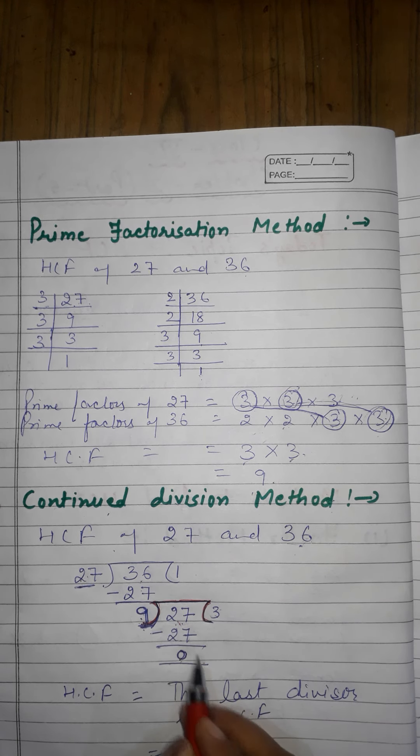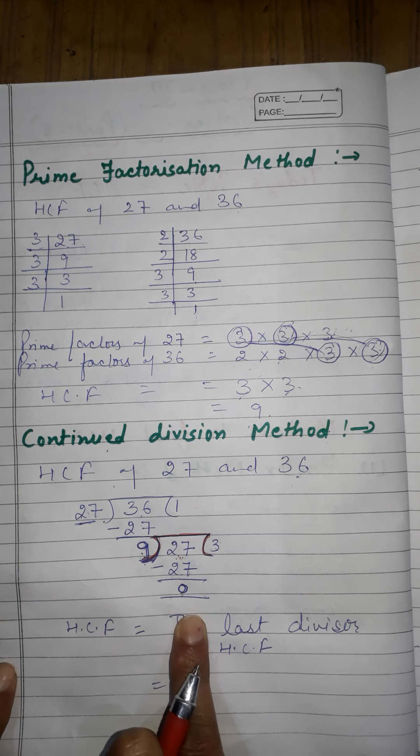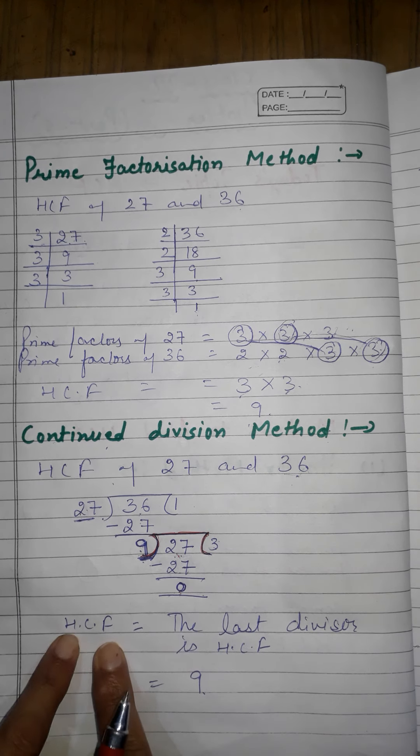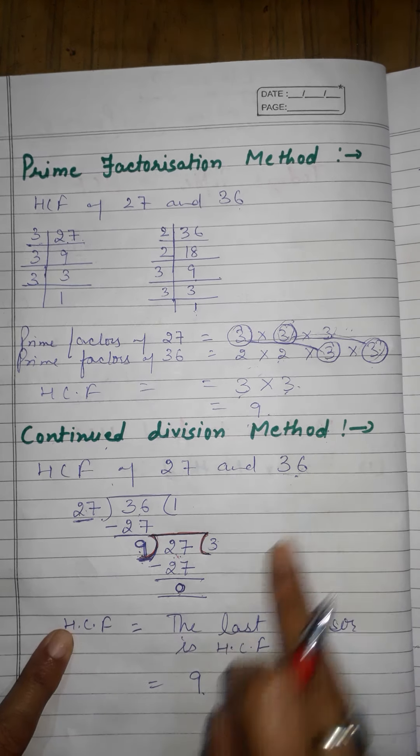The remainder is zero, so the process is complete. Now what is the HCF? In the Continued Division Method, the HCF is the last divisor. We had 36 as the first divisor, then 9 as the second divisor. After 9 there is no further divisor, so 9 is the last divisor — and therefore 9 is the HCF.